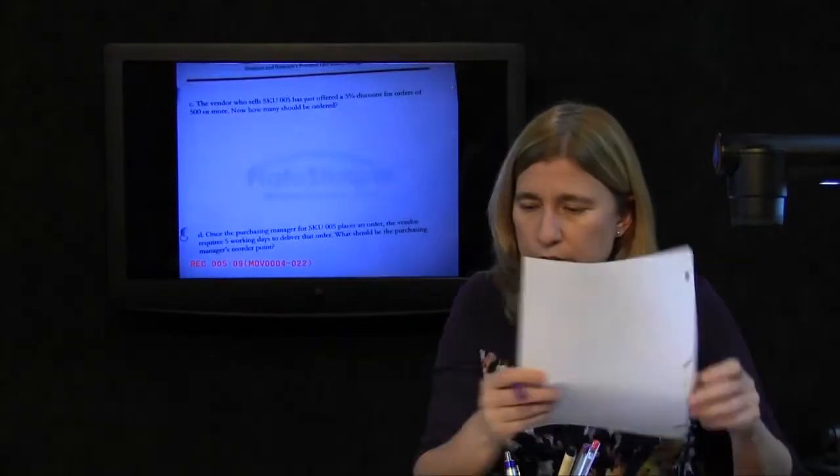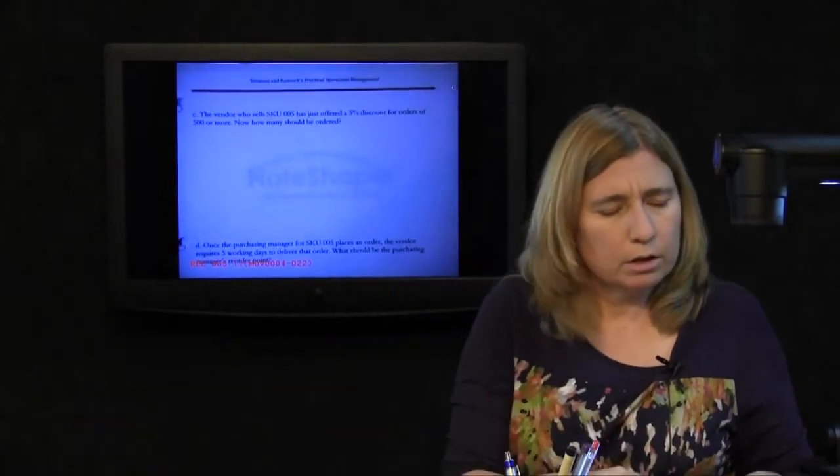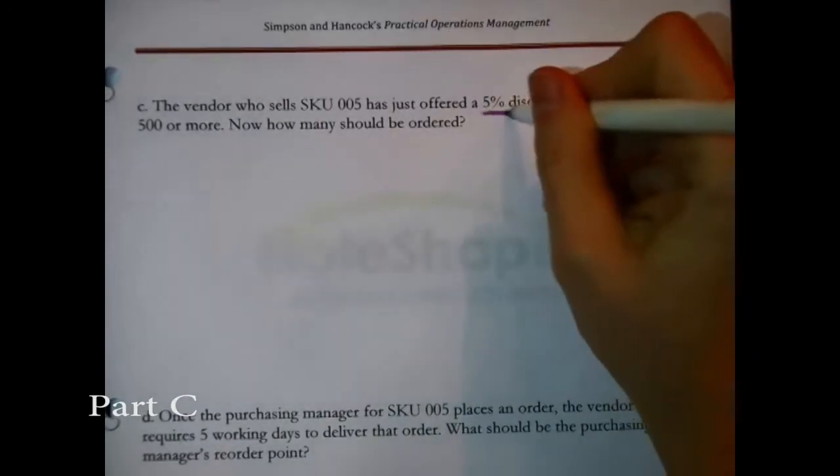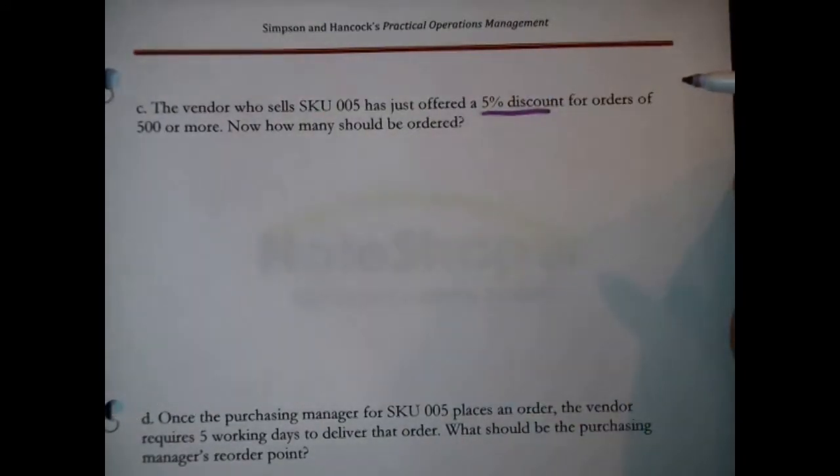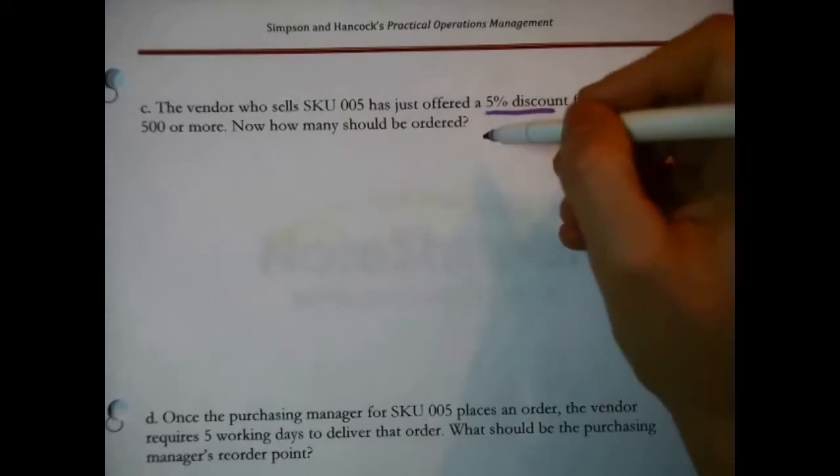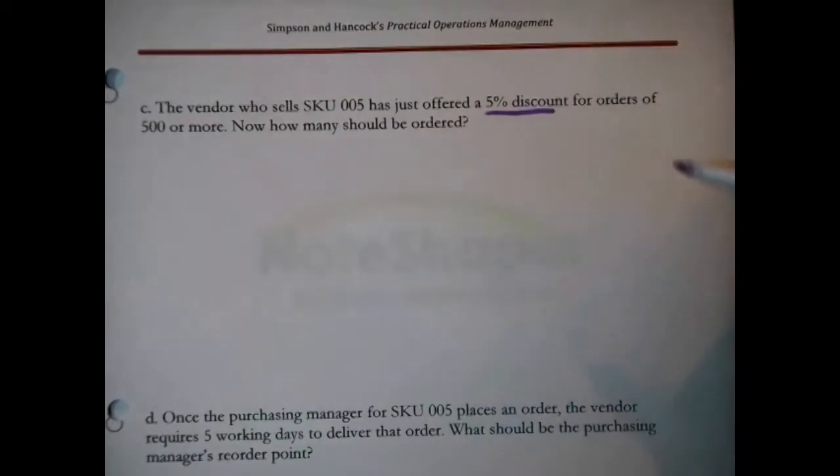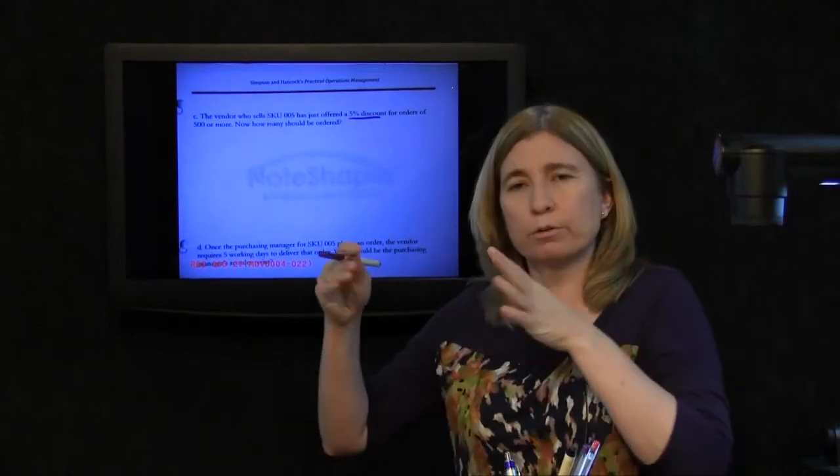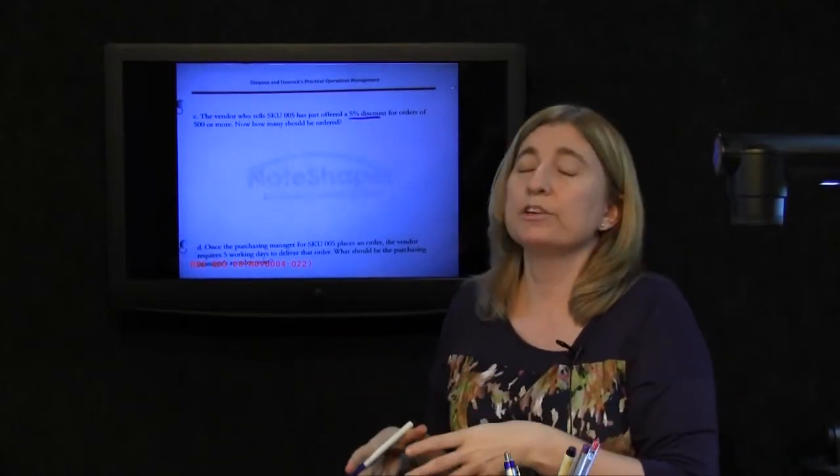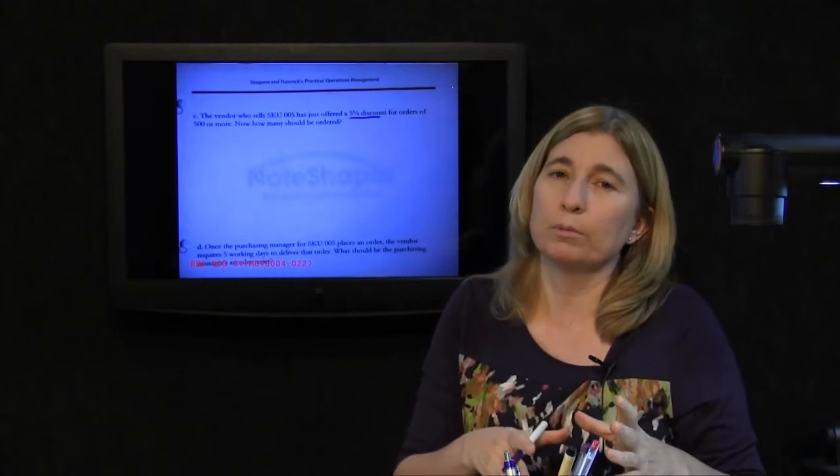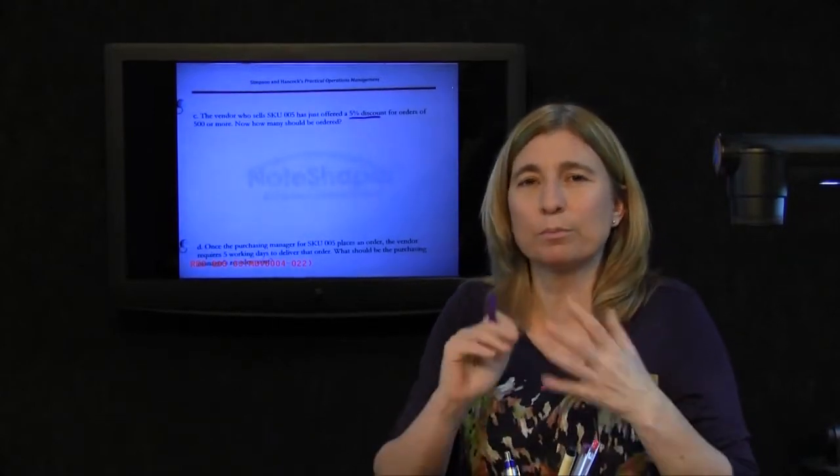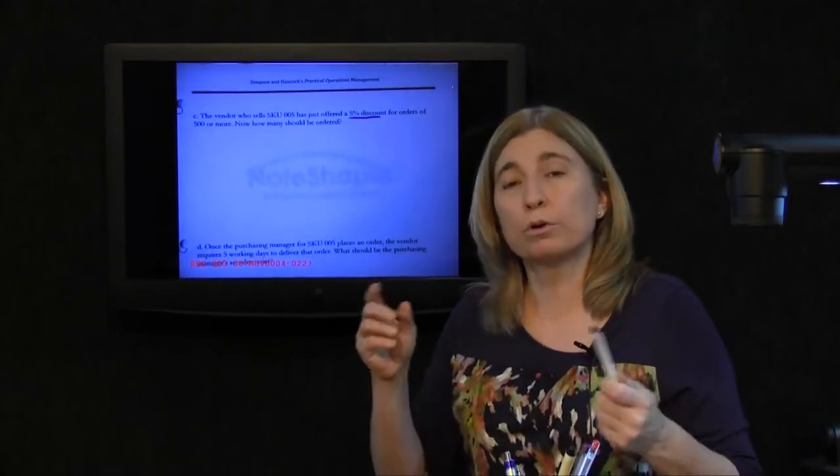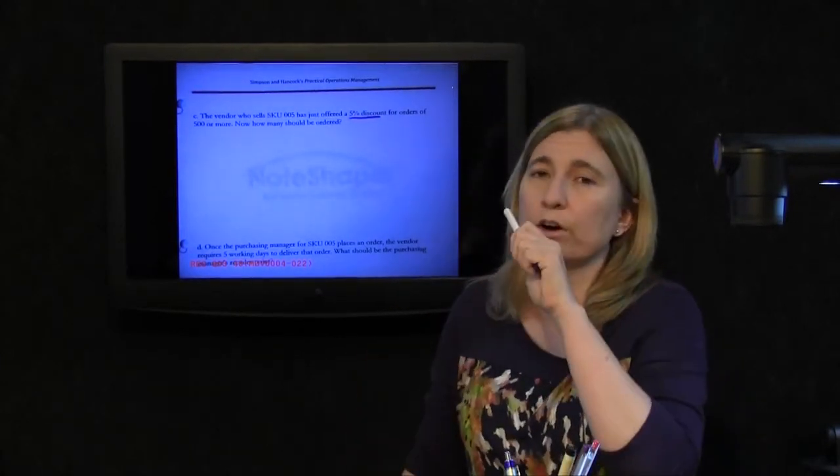Any other questions on this? The vendor who sells SKU005 has just offered a 5% discount on orders of 500 or more. Now, how many should be ordered? That one question just took this from being a regular EOQ problem, and changed it into a price break problem, because that's what the 500 is. It's a price break.